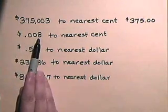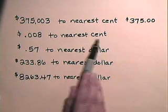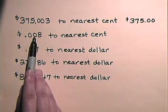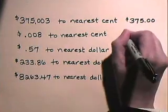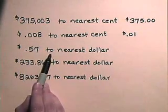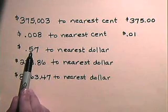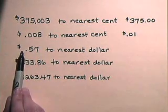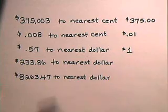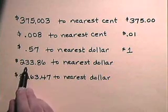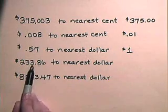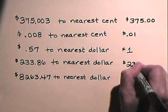We have eight one-thousandths of a cent. Let's round this one to the nearest cent — the nearest cent is in the hundredths place, so this particular place would go up by one digit, and we would have one cent. We're going to round fifty-seven cents to the nearest dollar. The digit in the ones place is five or greater, so this would become one whole dollar. For two hundred thirty-three dollars and eighty-six cents to the nearest dollar, we look to the right of the dollars place — this has to go up to two hundred thirty-four dollars.